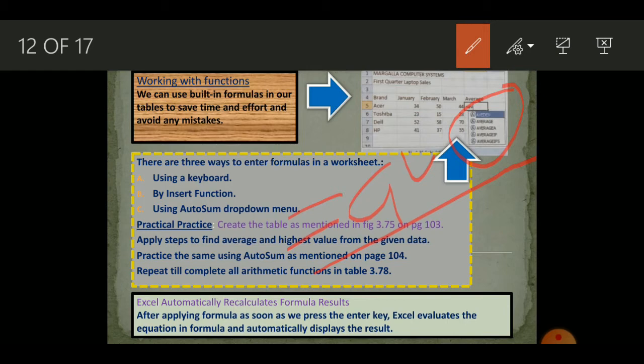Once you do that you can add the starting bracket and start giving the references of these cells. Or you can click with the mouse and by pressing the control key select these cells and release the control key. When you are done with the selection, close the bracket and press enter key. That's how you apply these formulas.